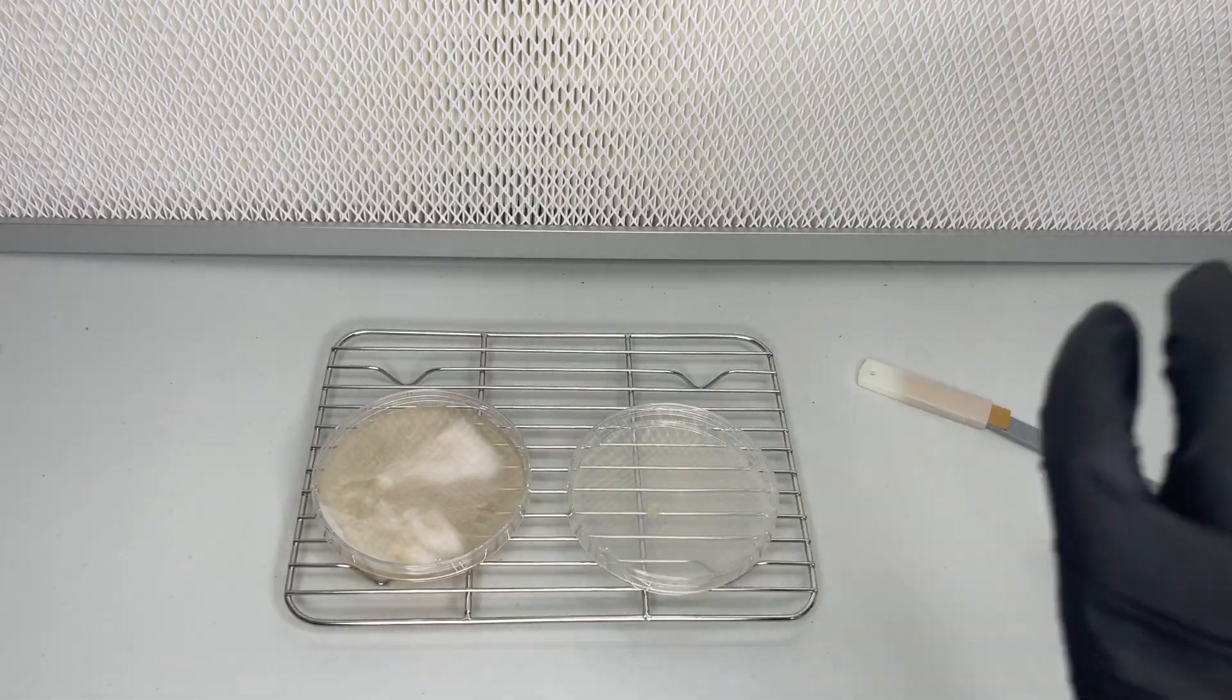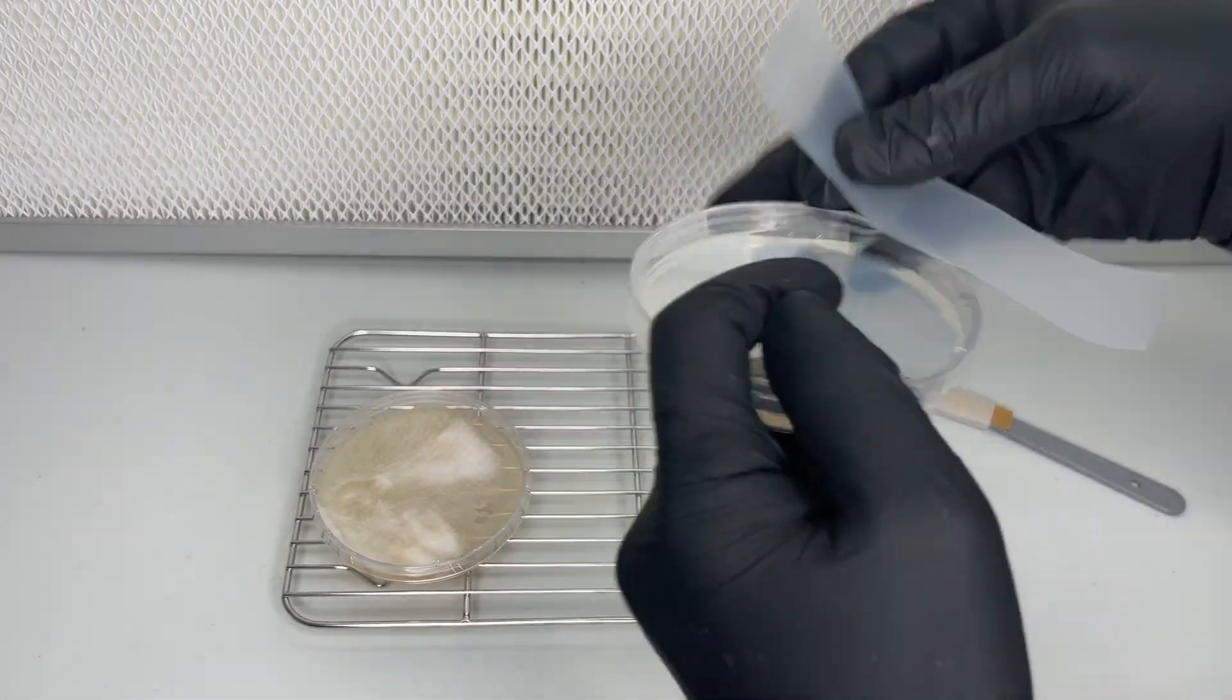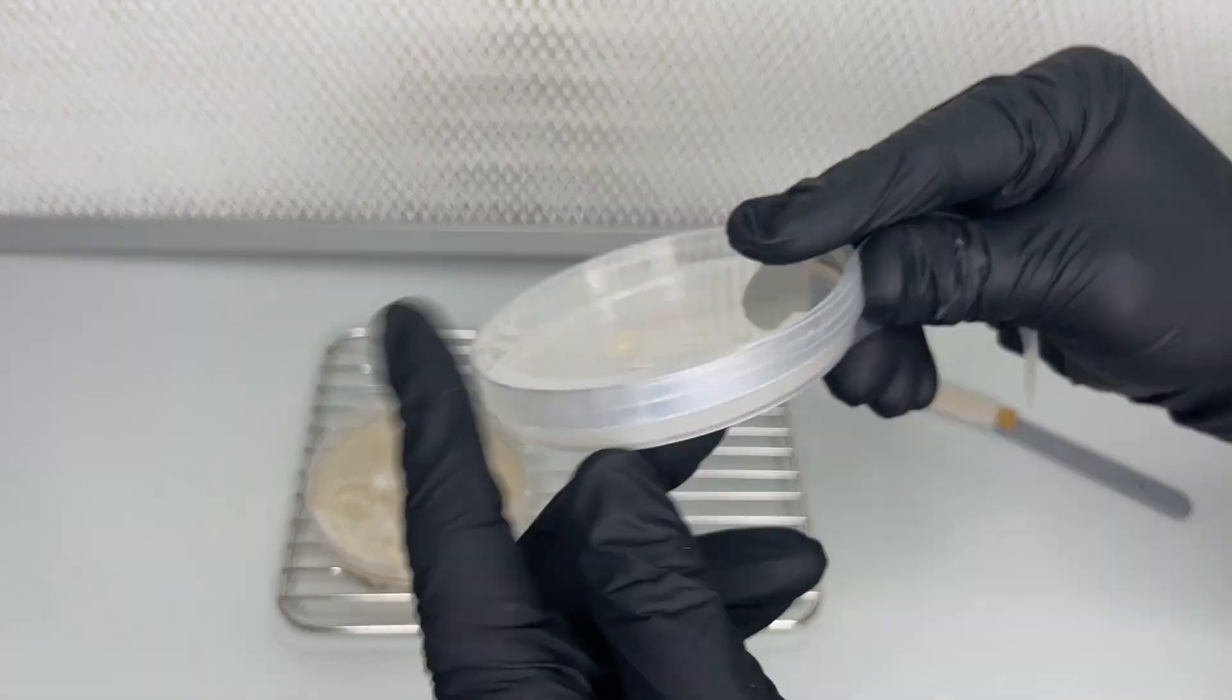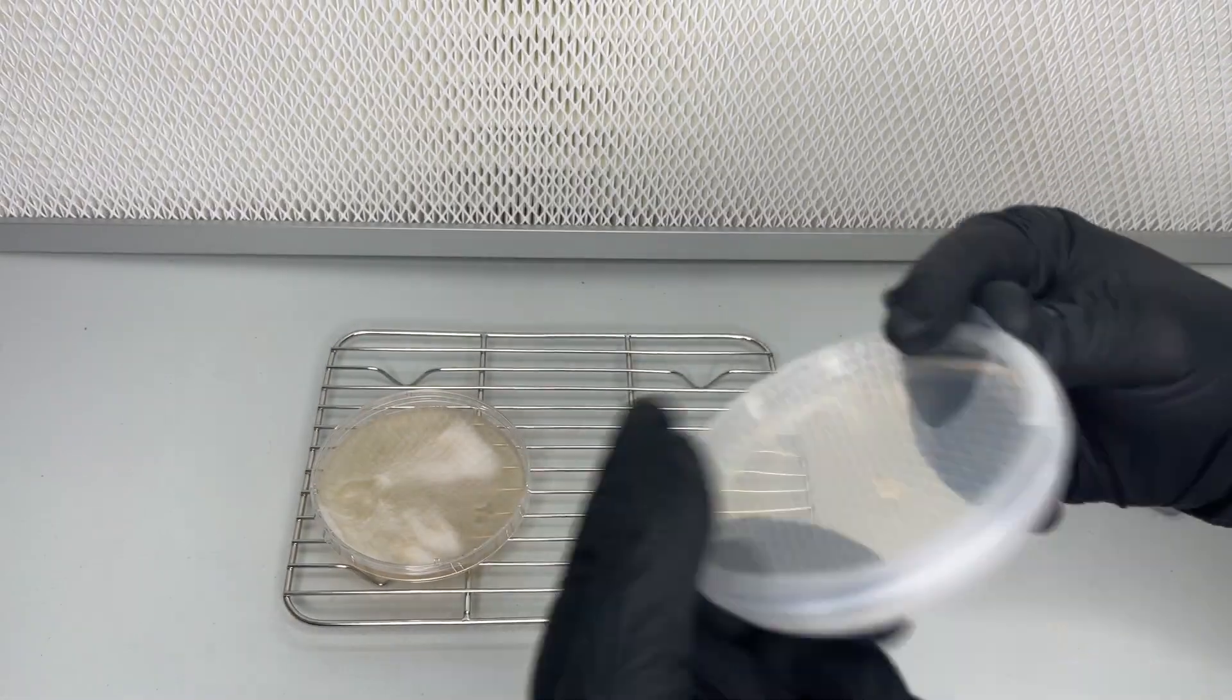The water agar plate is wrapped in parafilm and allowed to grow for one week at around 75 to 78 degrees Fahrenheit.